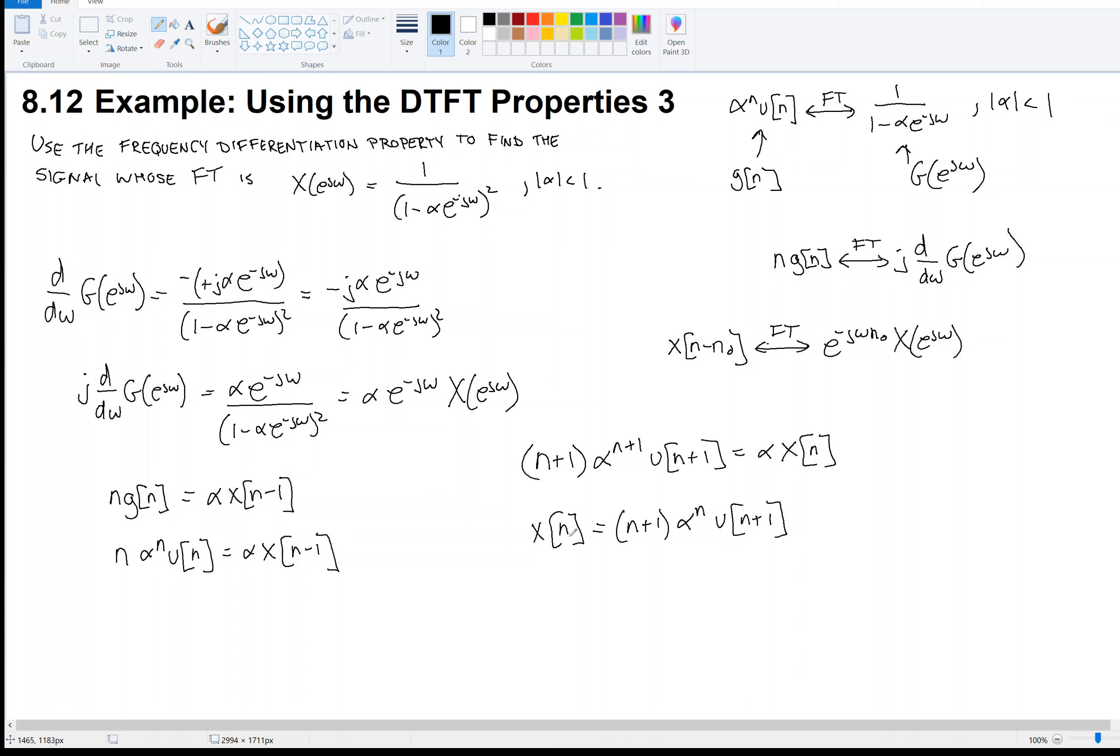This is correct, but we can simplify this a little bit. Notice when n equals minus 1, this term is 0. So even though the unit step at 0 is non-zero, this guy is 0. At n equals minus 1 we have 0 anyway, so we might as well just change this to (n+1)·α^n·u[n]. This is our final answer. Good problem, we used the frequency differentiation property and the time shift property.